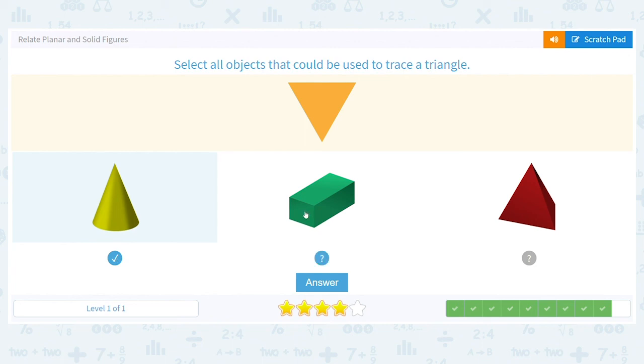Can this prism work? No. Which two shapes do you see? I see a rectangle and a square. So that won't work. But last but not least, I see a triangle on the face of this pyramid. That means that's got to work. So we have our cone and our pyramid.